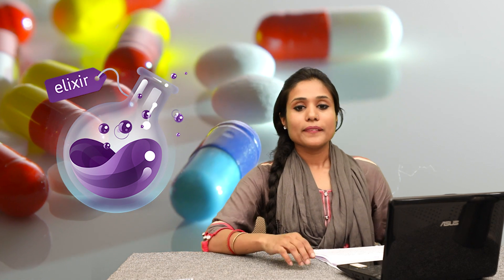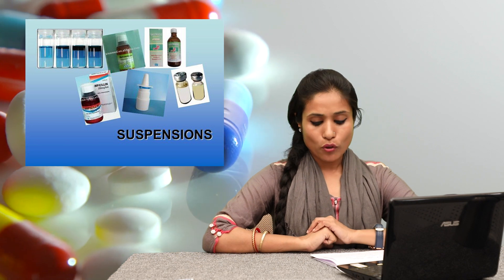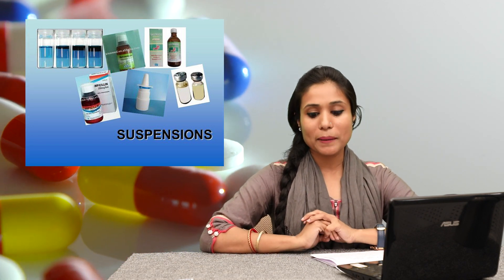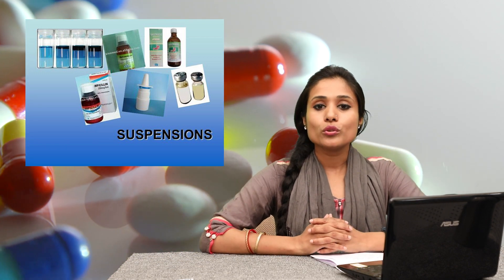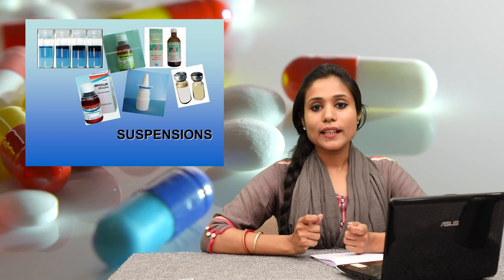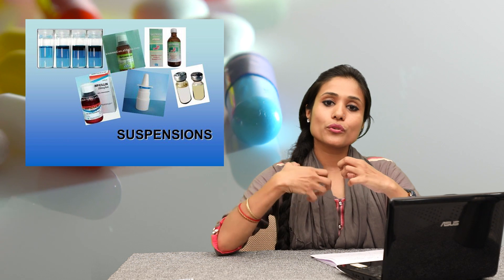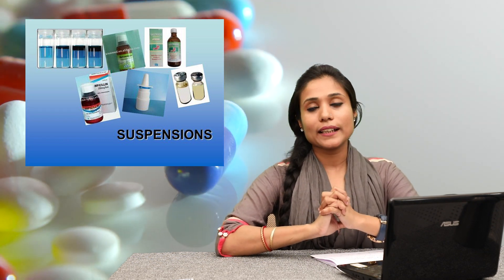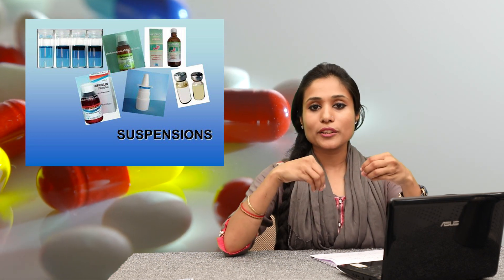Then comes Elixirs. Elixirs are alcoholic and hydroalcoholic drug substances, mixed and made in a viscous form. Then comes Suspension. Suspension is a biphasic dosage form. It involves mixed heterogeneous insoluble substances, combined by rigorous stirring and triturating — triturate means to mix it and make it into a form. Active and inactive substances are triturated because they are insoluble.